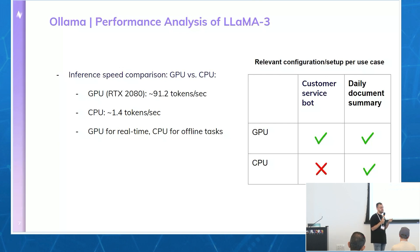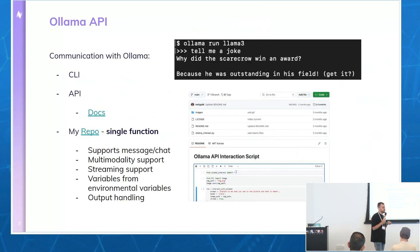The CPU rate was much slower — about 1.4 tokens per second, which is probably not enough for real-time applications. But for offline tasks it could be relevant. If you want to build a customer service bot without a GPU the rate would be too slow, but for something like a daily documentation summary, you can send the documentation at night, maybe even in parallel, and have the results waiting for you in the morning.